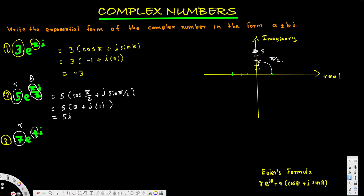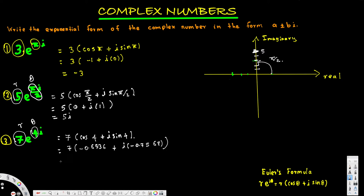Now let's look at the third one. Here r is 7 and θ is 4 radians — all angles are given in radians. Converting this into expanded form: 7·cos(4) plus i·sin(4). For this one we have to use a calculator. Plugging it in, we get cos(4) ≈ negative 0.6536 and sin(4) ≈ negative 0.7568.